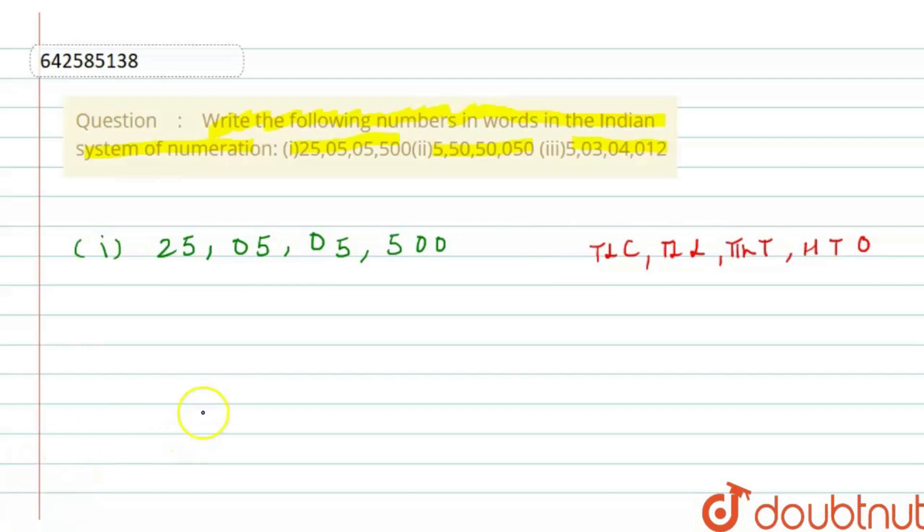Let's write it in words. We can see that it's ones, tens, hundreds, thousand, ten thousand, lakh, ten lakh, crore, ten crore. This is ten crore, so this will be twenty-five crore, five lakh, five thousand, five hundred. I hope the first part is clear.